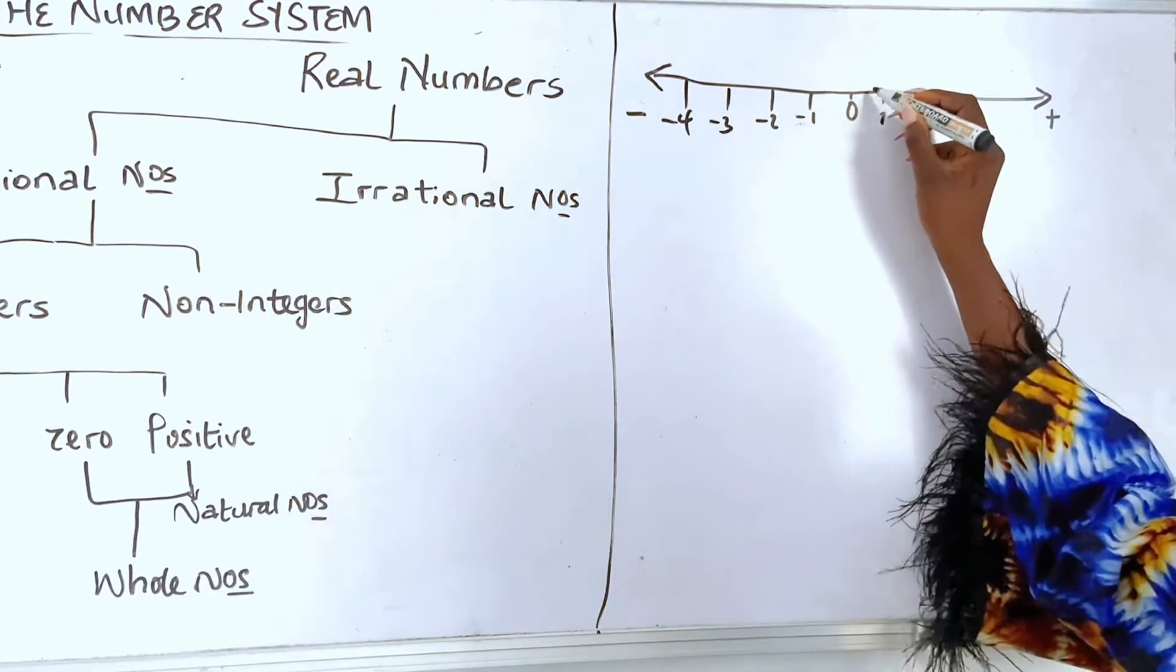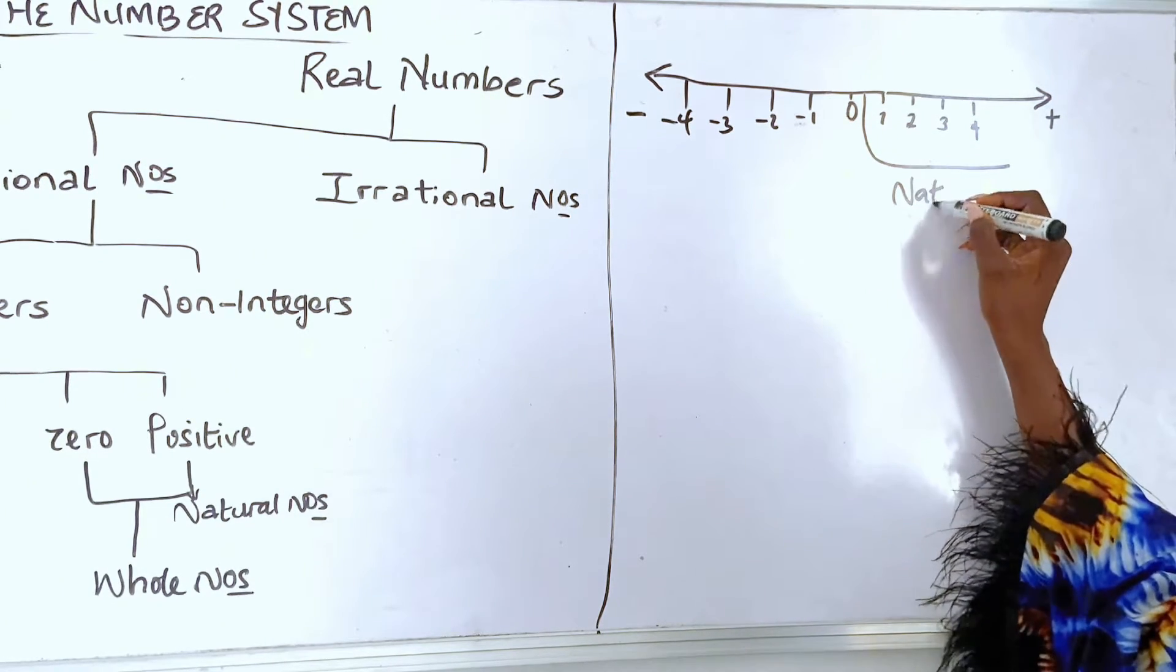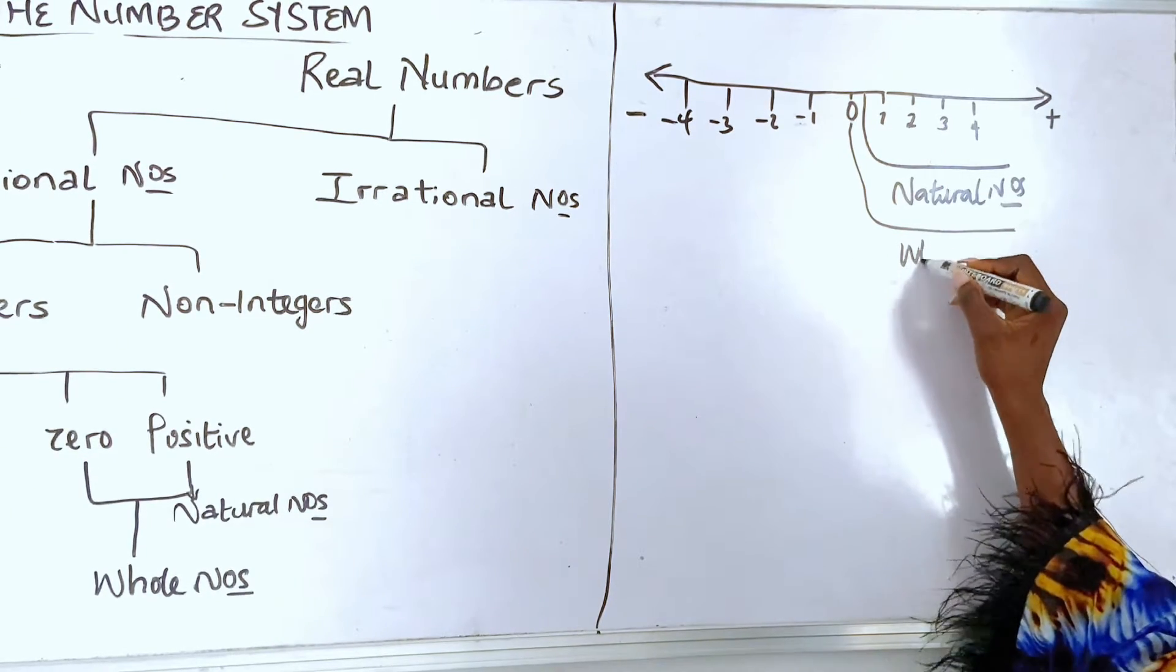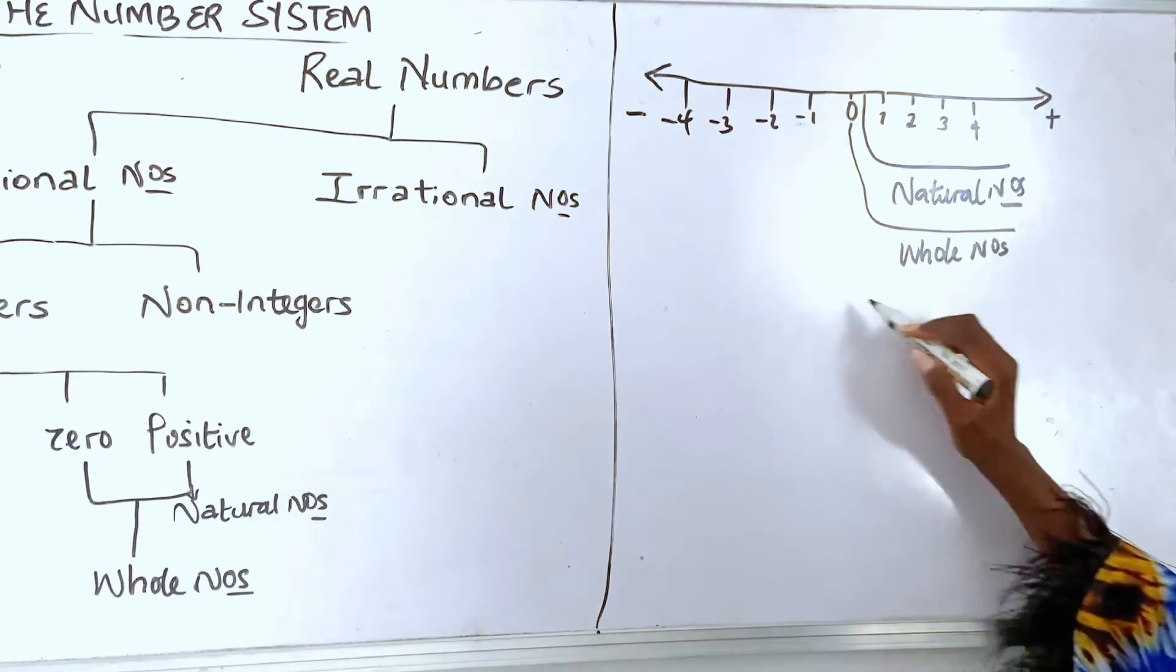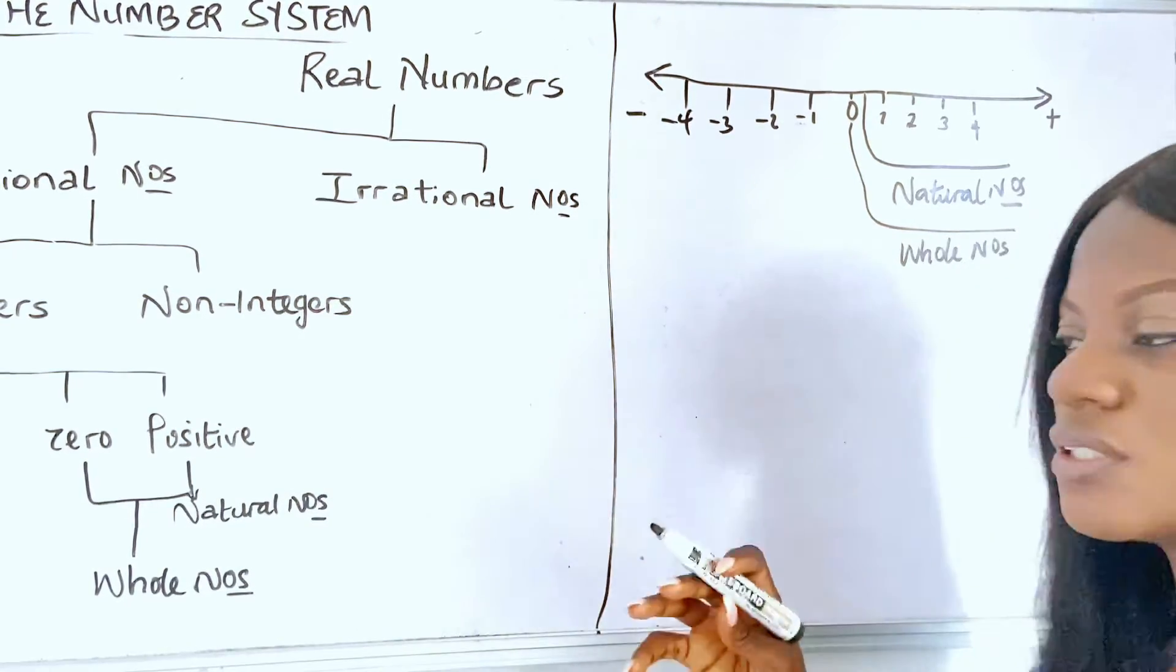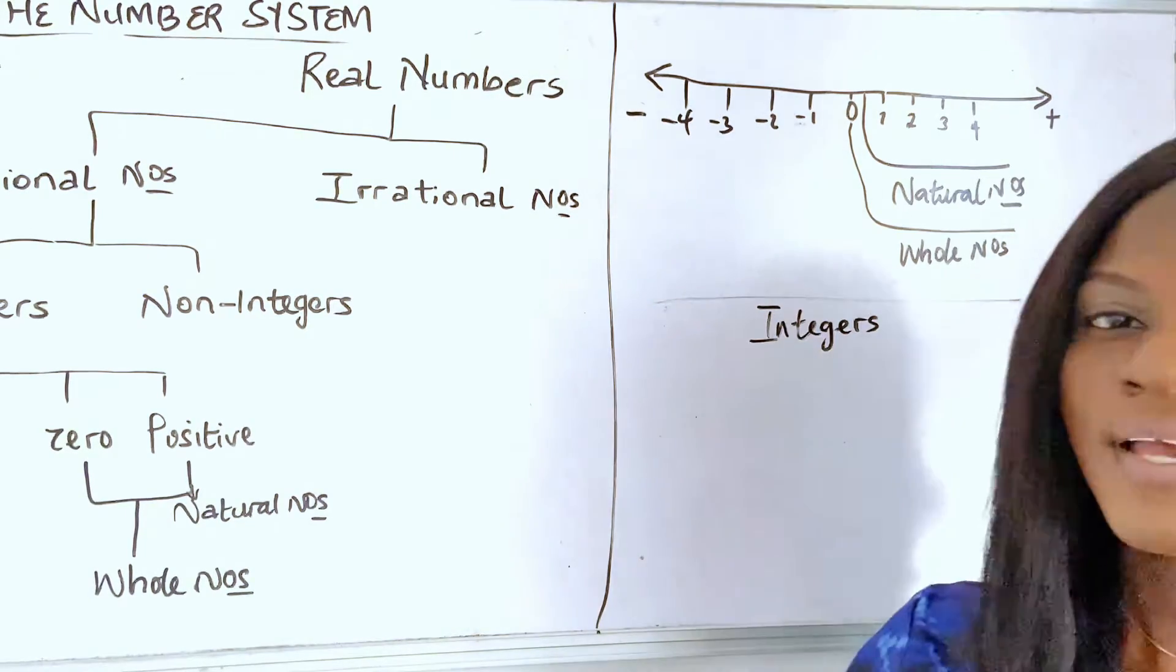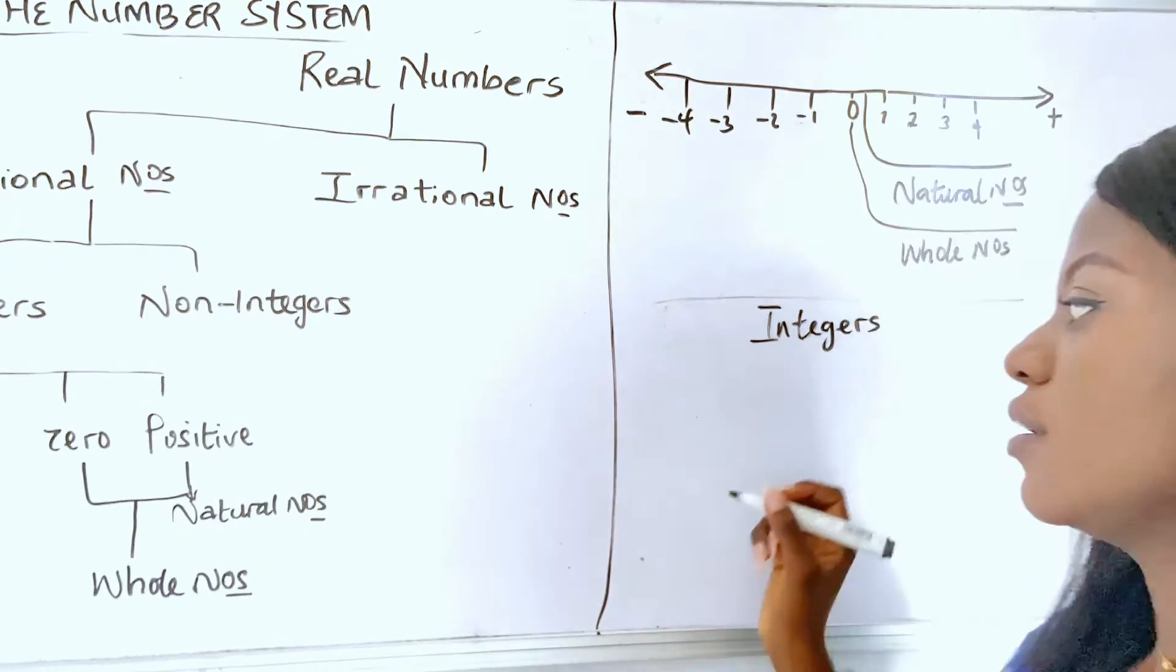Now, these numbers without zero are called natural numbers. And if we include zero to these natural numbers, they are called whole numbers. And if we include the whole of this number line, that's the negative plus positive including zero, they are called integers. Now, take note of what integers are.